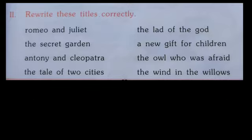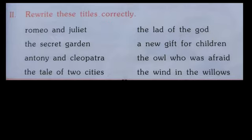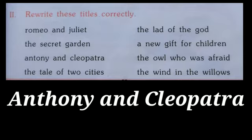In 'A New Gift for Children', A at the beginning, G in Gift, and C in Children need to be written in capital letters. Just like 'Romeo and Juliet', 'Antony and Cleopatra' is also a play written by Shakespeare, and therefore A in Antony and C in Cleopatra must be in capital letters.